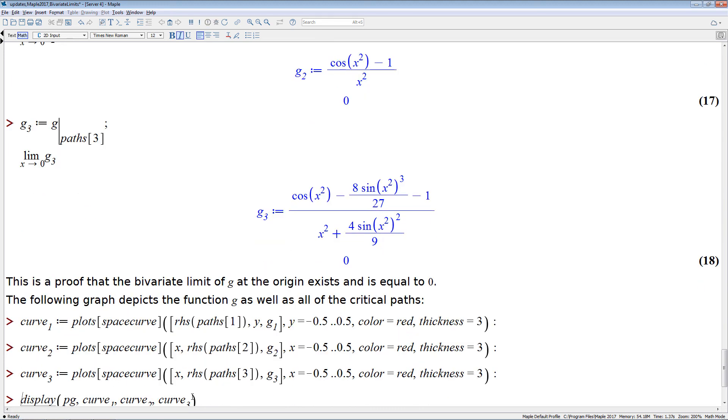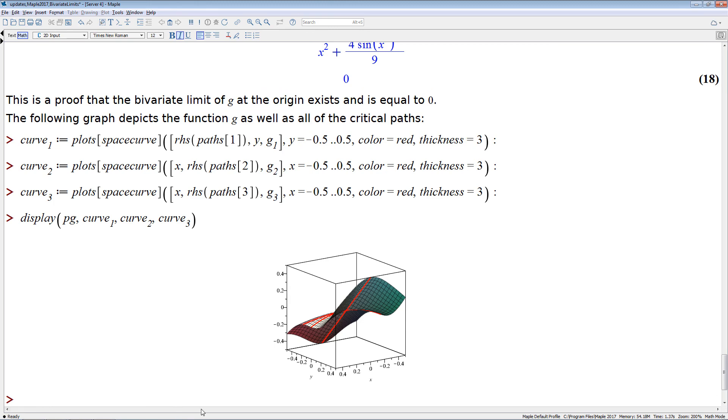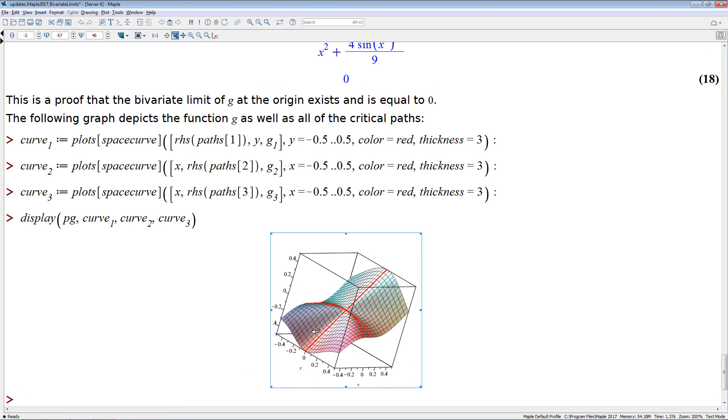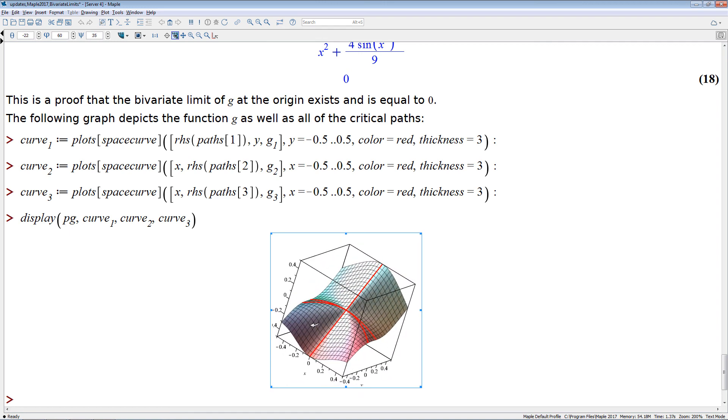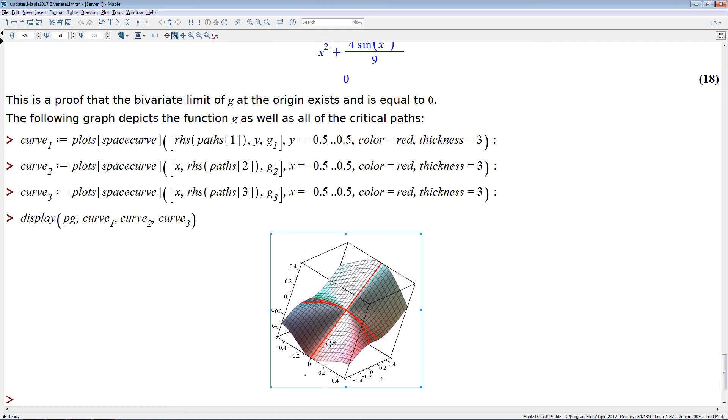And now the last thing is we can create a plot that has both the function and all the critical curves embedded into it, and we can again clearly see that the limits along all those critical curves are indeed 0. So this is how Maple computes those bivariate limits.